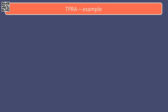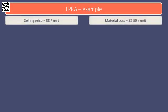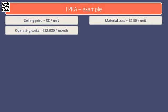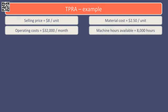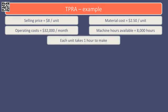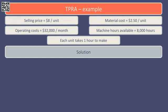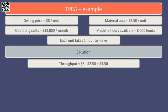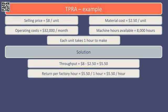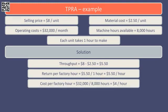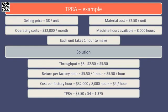Let's run through a quick example to demonstrate the throughput accounting ratio calculation. A business makes and sells a product that has a selling price of $8 per unit, the material cost per unit is $2.50, monthly operating costs are $32,000, and there is a bottleneck in relation to machine hours — there are only 8,000 hours available each month and it takes 1 hour to make each unit. Based on this data, the throughput per unit is $8 minus $2.50 giving us $5.50. The return per factory hour is therefore $5.50 divided by 1 hour, so $5.50 per hour. The cost per factory hour is the monthly operating costs of $32,000 divided by the total time available of 8,000 machine hours, giving a cost of $4 per hour. The throughput accounting ratio is therefore $5.50 divided by $4, giving us 1.375.